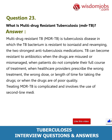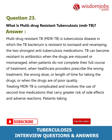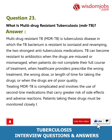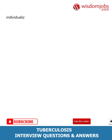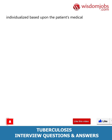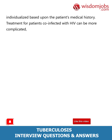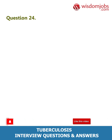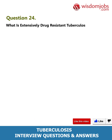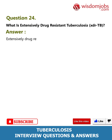Treating MDR-TB is complicated and involves the use of second-line medications that carry greater risk of side effects and adverse reactions. Patients taking these drugs must be monitored closely throughout the course of treatment. The regimen usually requires at least 18 to 24 months and must be individualized based upon the patient's medical history. Treatment for patients co-infected with HIV can be more complicated, usually further lengthening treatment time.